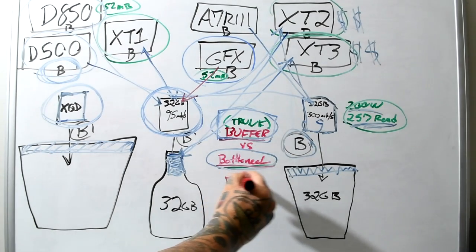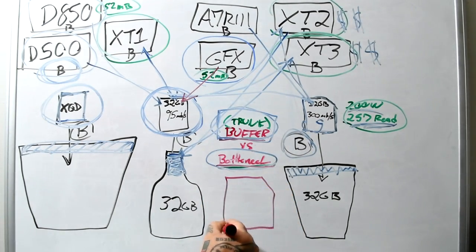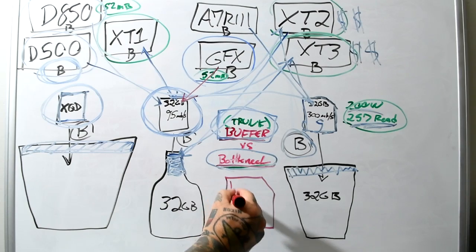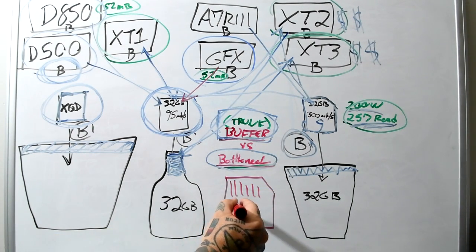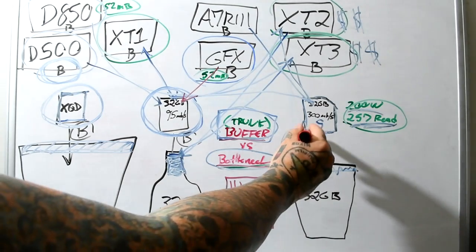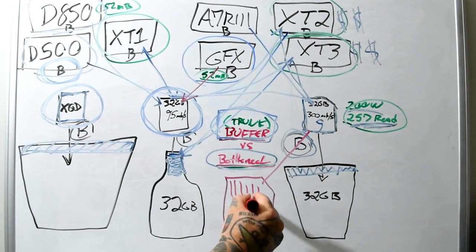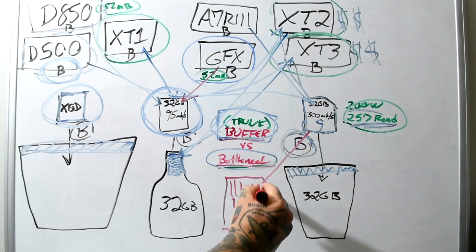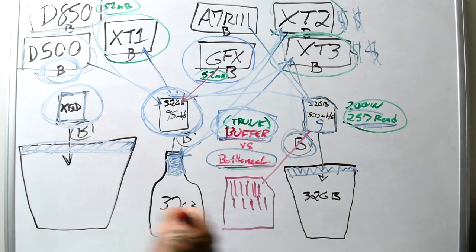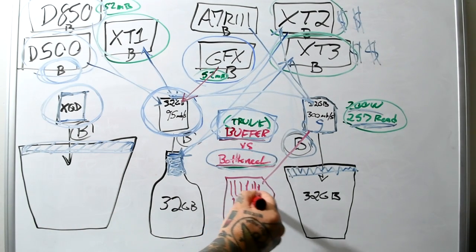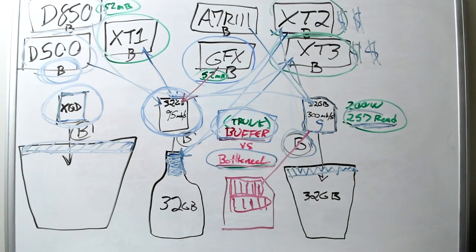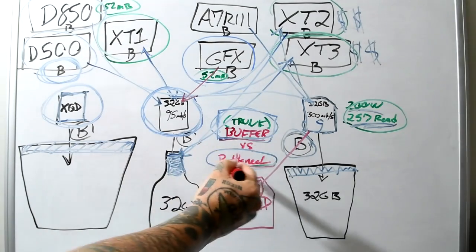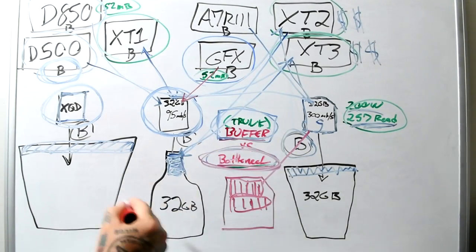Because if you notice on the back of the SD cards, on the cheaper SD cards, like the 95 megabit per second, you have a single set of pin slots, and this is not accurate, not the size anyway. And on these UHS-II card slots, you have a second set of contact pins. This is not the scale, obviously so. If you look on the back of your card, you'll see that. You know what that second set of pins is for? That's to eliminate out this issue right here, bottleneck.